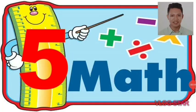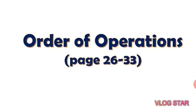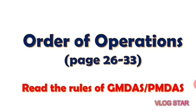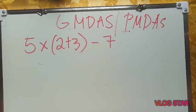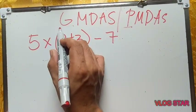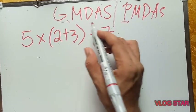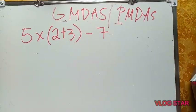Hello class, good morning. Today I will discuss order of operations and read the rules of GMDAS or PEMDAS. GMDAS stands for Groupings, Multiplication, Division, Addition, and Subtraction, while PEMDAS stands for Parenthesis, Multiplication, Division, Addition, and Subtraction. G stands for Grouping, P stands for Parenthesis, followed by Multiplication, Division, Addition, and Subtraction.